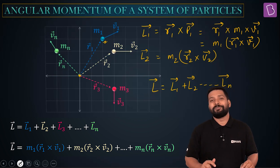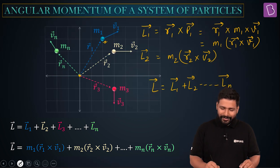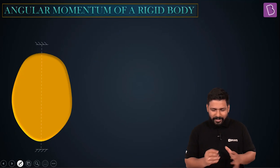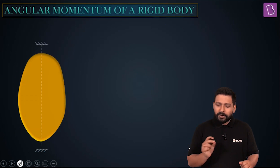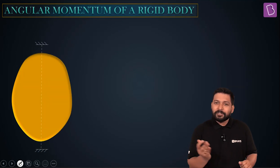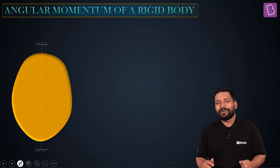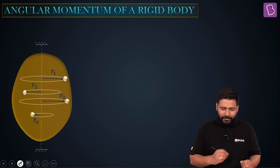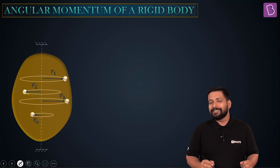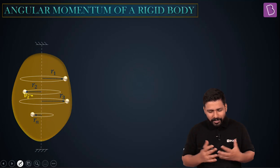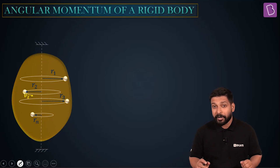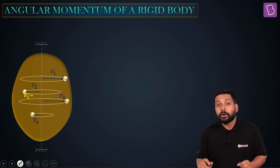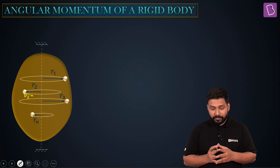Now what about a rigid body — how do you calculate that? A rigid body is made up of many small individual particles, and if it is rotating about a particular axis, each particle is going to move in different circles. So how do we find the value of angular momentum for a rigid body?